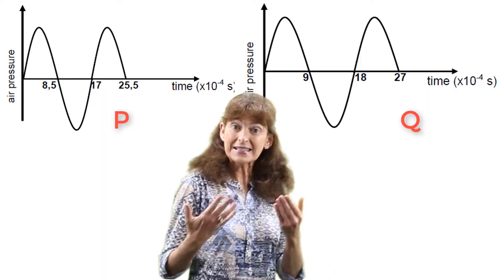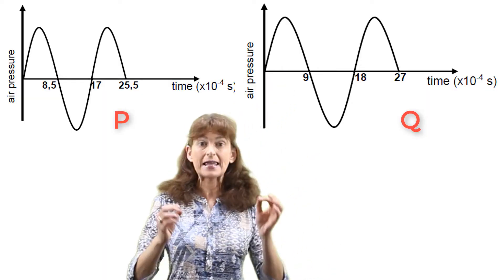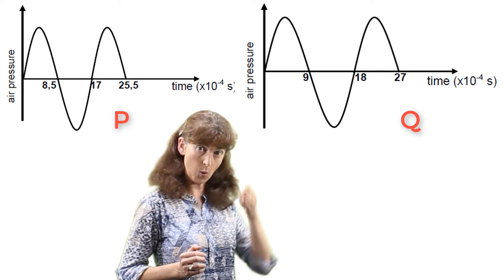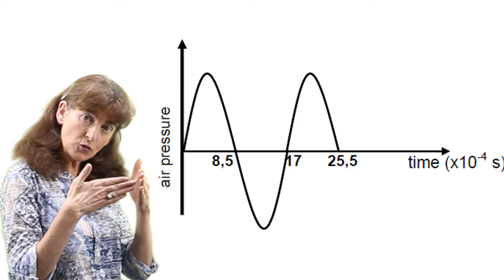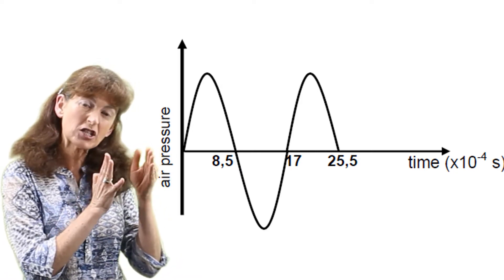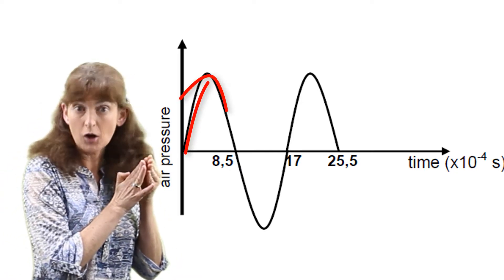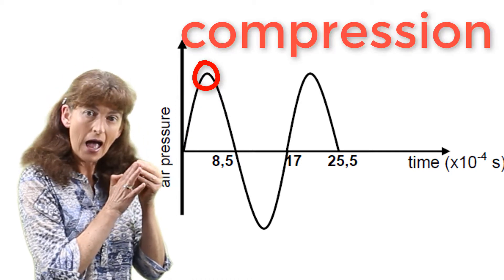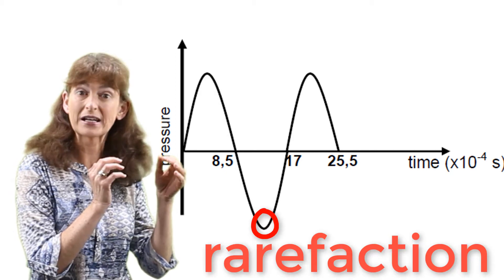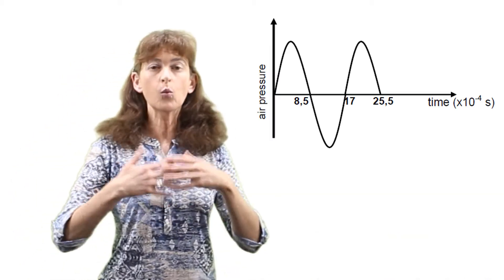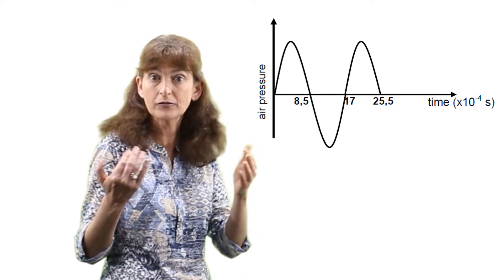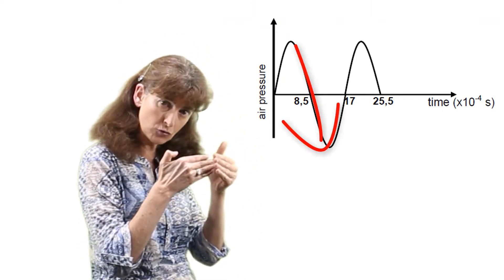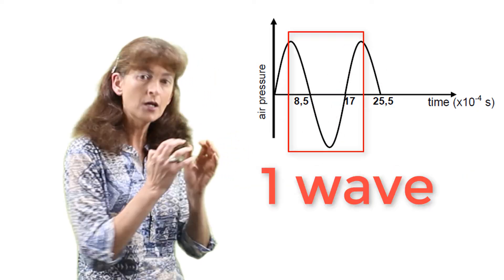These graphs represent the air pressure changes at one point over time. As the sound waves pass through the point graphed, the air pressure increases, corresponding to a compression, and then decreases, corresponding to a rarefaction. One full wave is one full cycle starting from a compression through rarefaction and back to compression.